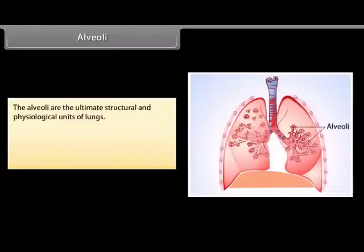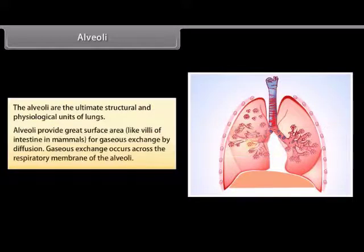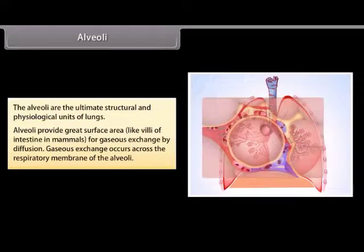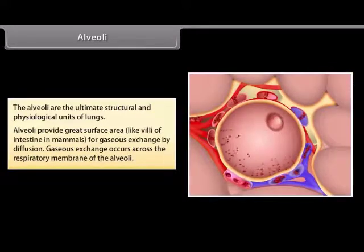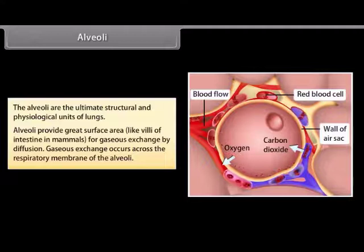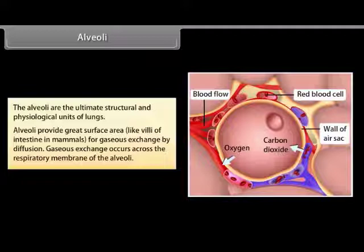The alveoli are the ultimate structural and physiological units of the lungs. They provide a great surface area — similar to the villi of the intestine in mammals — for gas exchange by diffusion. Gaseous exchange occurs across the respiratory membranes of the alveoli.